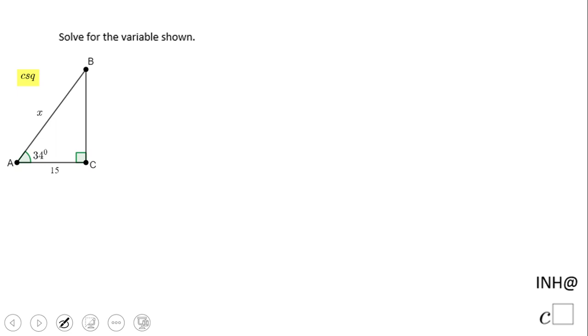Welcome or welcome back. I need help at C square. In this problem we're going to look to solve for the variable shown, which is right here via this X, which is the hypotenuse of this right triangle. What else we see in this picture? We see an angle and we see one leg.